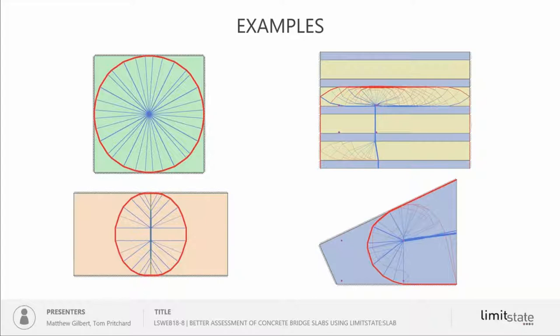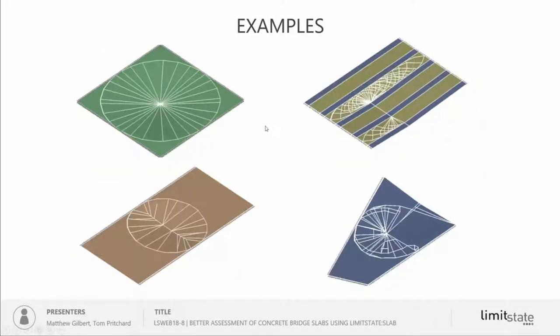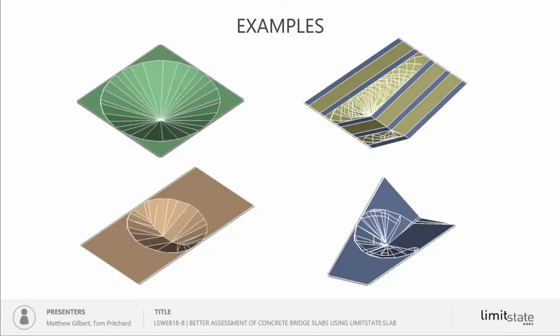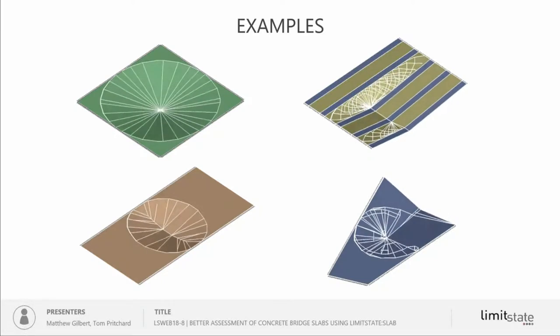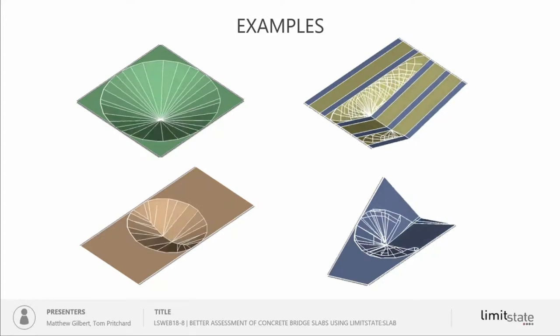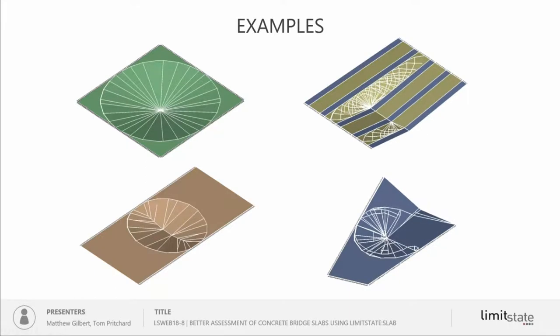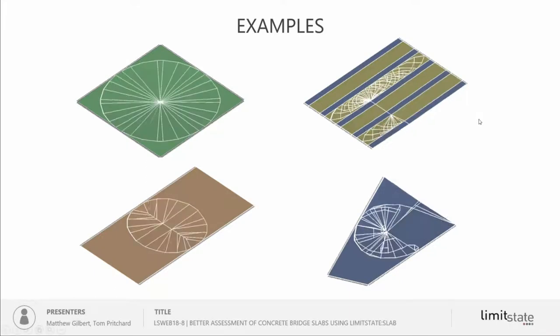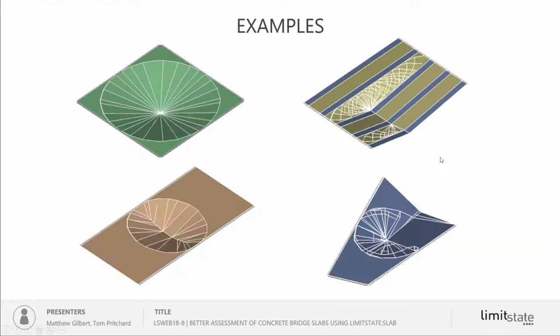The two examples on the right actually relate to bridge problems. You can see that the yield line mechanisms there would be potentially quite difficult to identify by hand. The same mechanisms are shown here in different forms — we can see an animation of the mode of response to make things clearer. The mechanisms on the right-hand side are of a much more complex nature. So what we're going to be looking at today is how we can identify these more complex mechanisms using hopefully easy to use software.